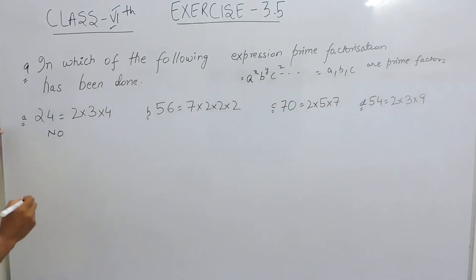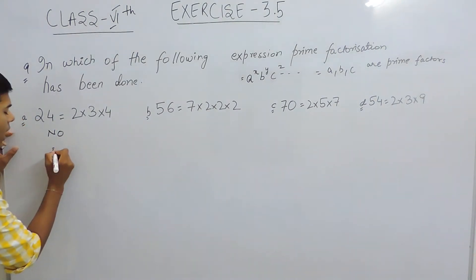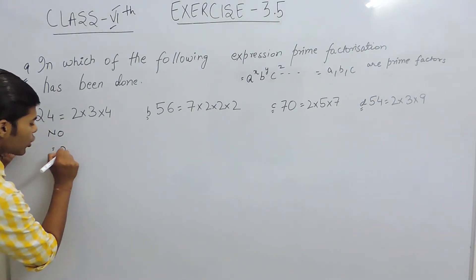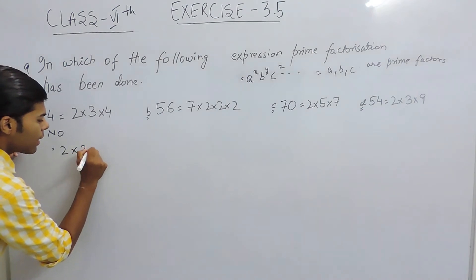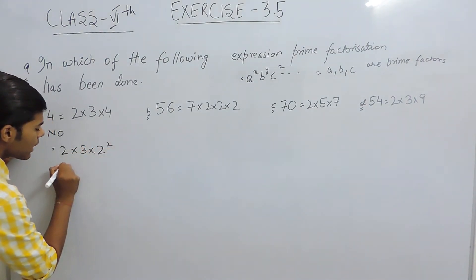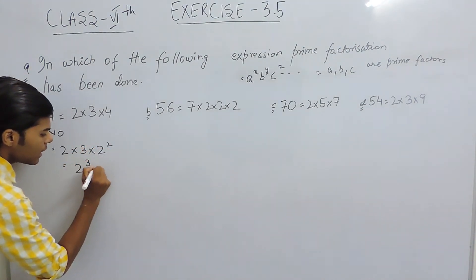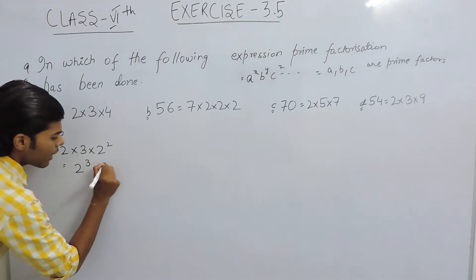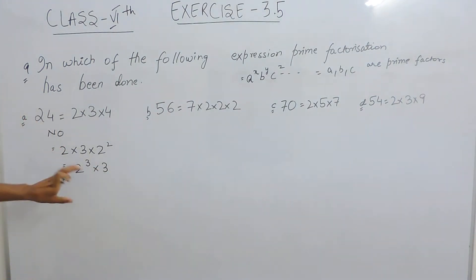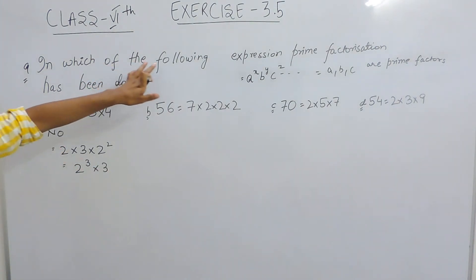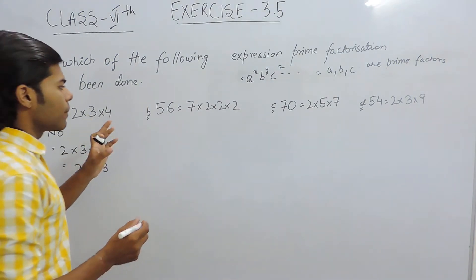And if the prime factorization would have been done, then the answer would be 2 multiplied with 3 multiplied with 2 to the power 2, that is 2 to the power 3 multiplied with 3. So this would have been the answer if prime factorization would have been done.